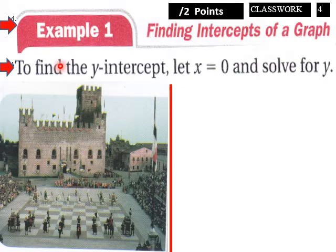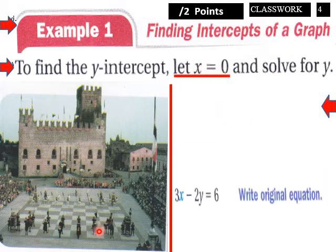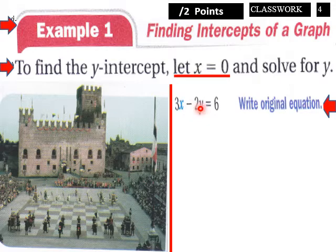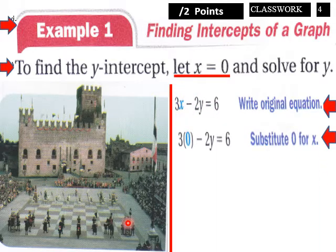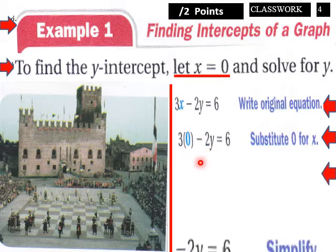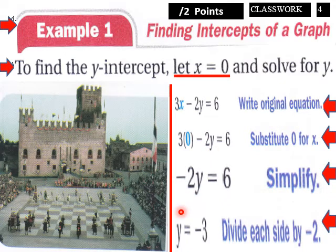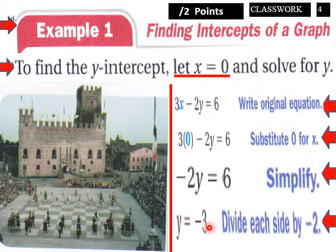Okay. Example one, finding the intercepts of a graph. To find the y-intercept, let x equals zero and solve for y. Let x equals zero. Here's our equation here. Let x equals zero here. So we plug in zero. We get negative two y equals six. We solve for y and y equals negative three. So there is our when x equals zero, y equals negative three. That would be our y-intercept.